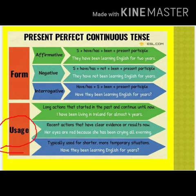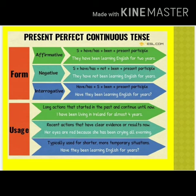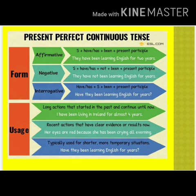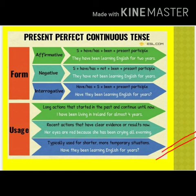Now let us discuss the uses of present perfect continuous tense. First, it is used for long actions that started in the past and continue until now. Example: 'I have been living in Ireland for almost four years.' Second, for recent actions that have clear evidence or results now: 'Her eyes are red because she has been crying all evening.' Third, it is typically used for shorter or more temporary situations. So these were all the formulas and uses of present tense and its sub-types.